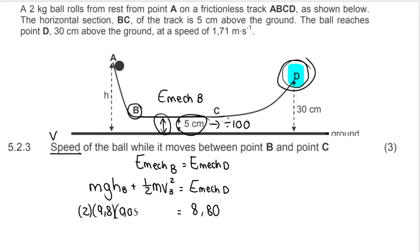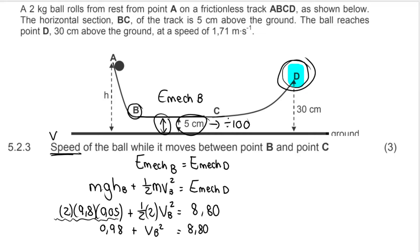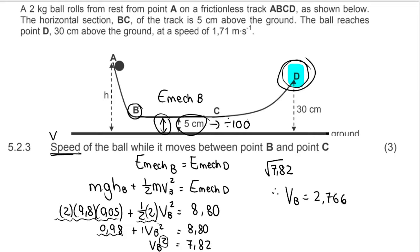So: 2 × 9.8 × 0.05 + ½ × 2 × v²_B = 8.80. Multiplying through (and ½ × 2 = 1): 0.98 + v²_B = 8.80. Therefore v²_B = 8.80 − 0.98 = 7.82. Taking the square root: v_B = 2.796..., which rounds to 2.80 meters per second. Speed is a scalar so no direction is needed. That's my final answer — I hope that was helpful and I'll see you in another video. Bye everyone!